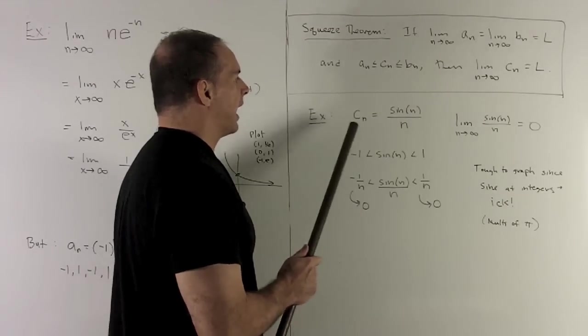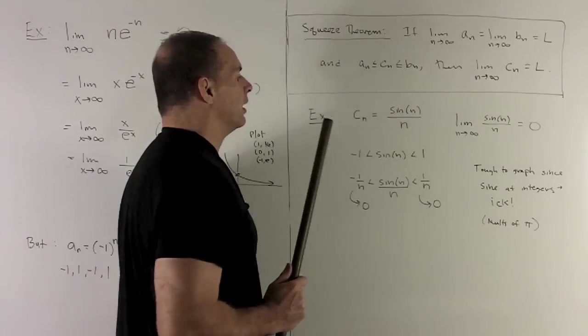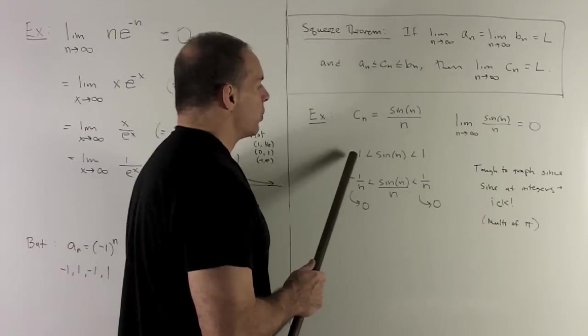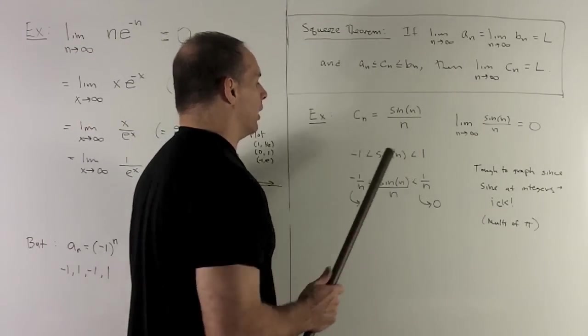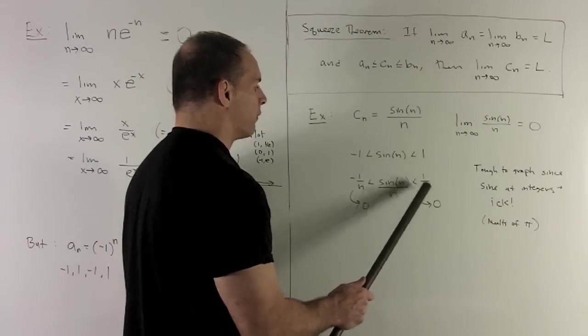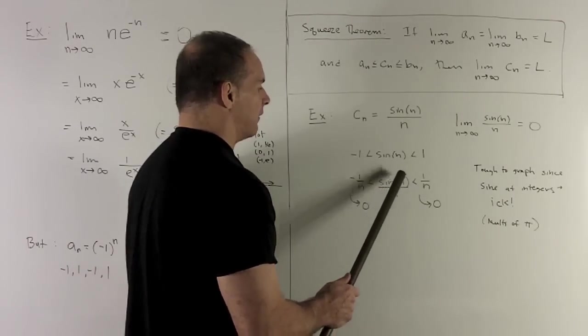So let's try the sequence c sub n equal to sine n over n. So here's the trick. We know sine is always between minus 1 and 1. If I divide everything through by n, we're going to have minus 1 over n, 1 over n, and in the middle, sine of n over n.